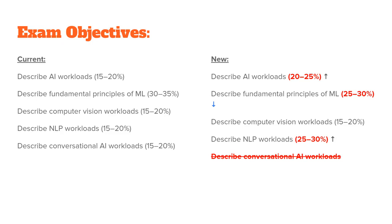Computer vision has pretty much remained unchanged. The most significant change is that they've removed the last requirement, conversational AI, and basically merged it with the natural language processing workloads. They've bumped up the NLP requirement from 15–20 to 25–30, but it does contain both requirements in one.